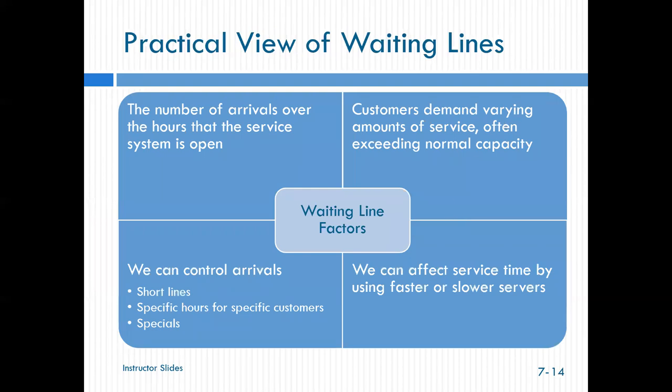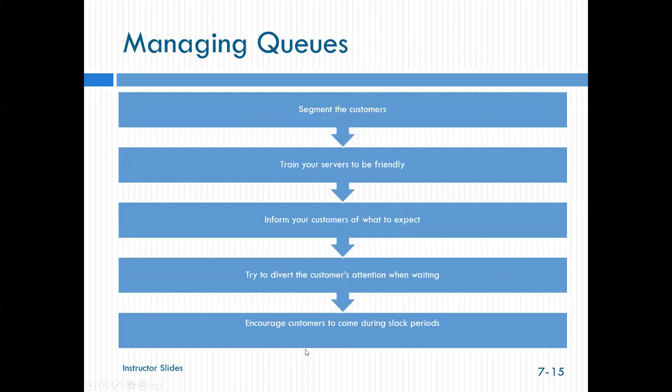So things that we think about or consider when we think about our waiting lines or queues is what they're also called. We're interested in the number of arrivals over the hours that the service system is open. We're interested in how much does customer demand vary in terms of the amounts of service that are needed? How often does it exceed our normal capacity? Can we control arrivals? Can we do something like short lines? We talk about that, like, you know, before we had all of the self checkout, you could have a register line for people with 10 items or less at the grocery store. Or do we have specific hours for specific customers? Do we run specials to try to draw people in at off peak hours? We can affect service time by using faster or slower servers as well.